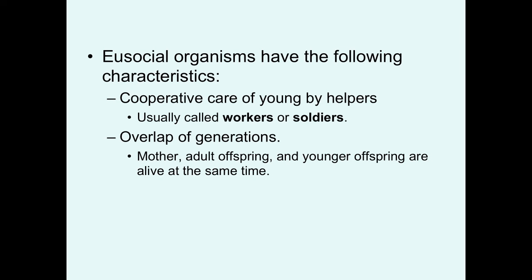What defines a eusocial system? Eusocial organisms have the following characteristics: cooperative care of young by helpers, which are usually referred to as workers or soldiers; overlap of generations so that mother, adult offspring, and younger offspring are all alive at the same time. These are the same characteristics associated with cooperative breeding, which was the topic of our last lecture.